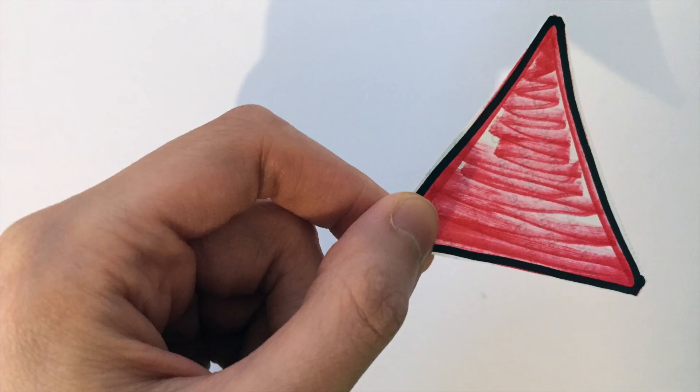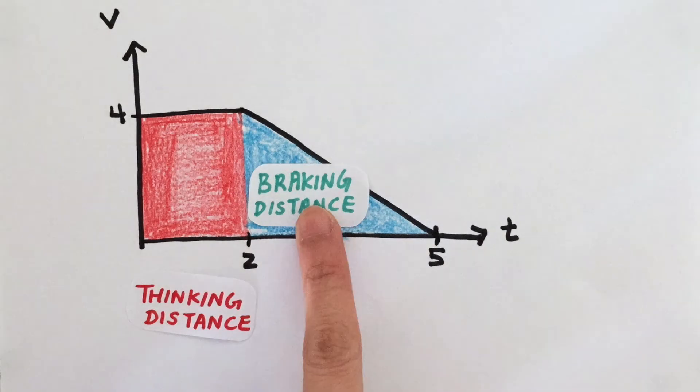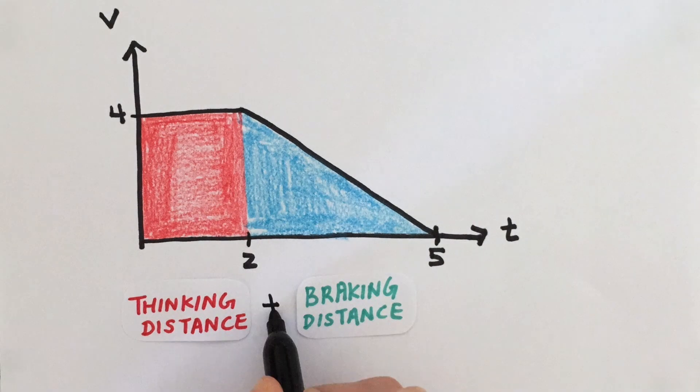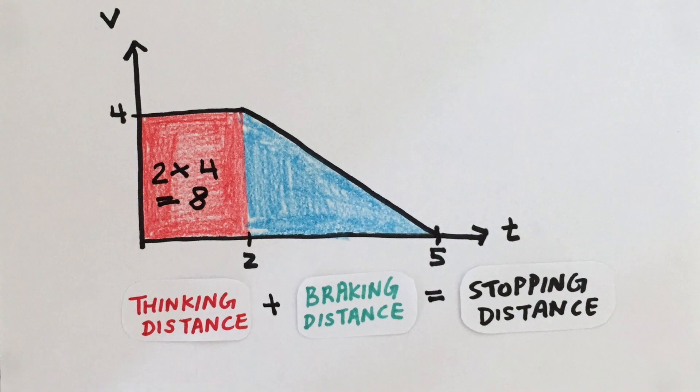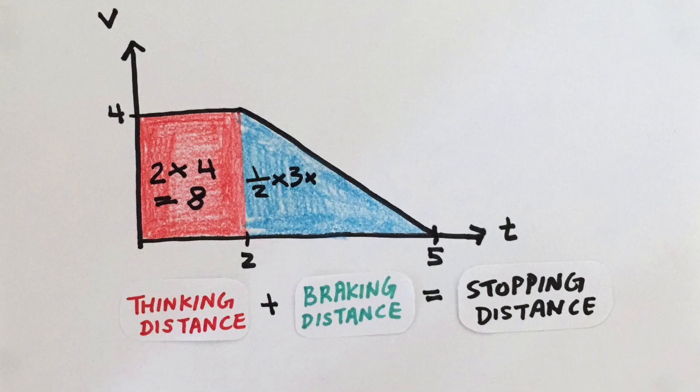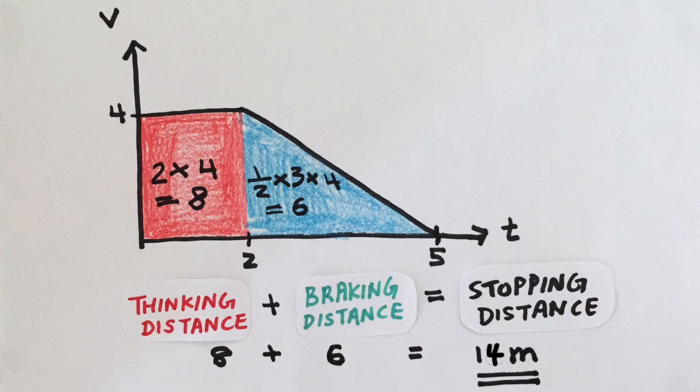We know that the area underneath a velocity time graph gives us the distance traveled by the car. So, if we add up these two areas, we get what's known as the stopping distance. This is the total distance the car travels from the moment that the driver reacts to when the car actually stops.